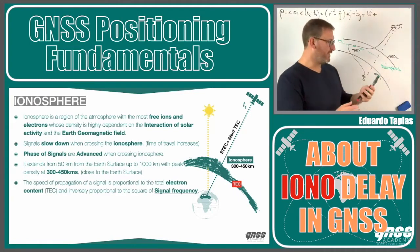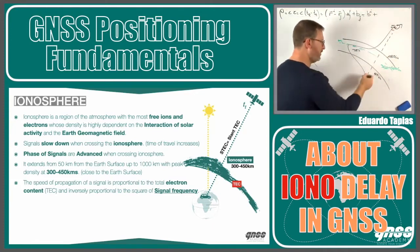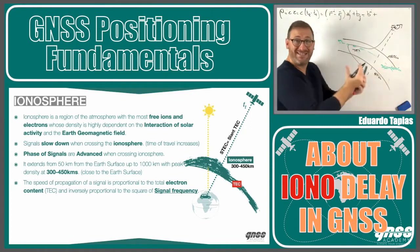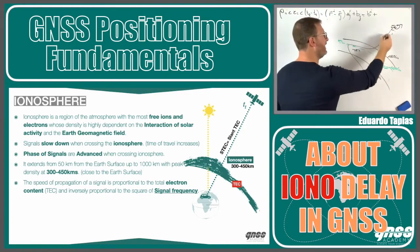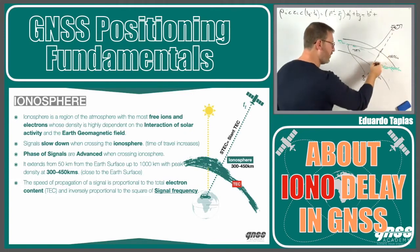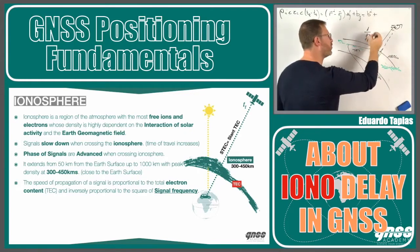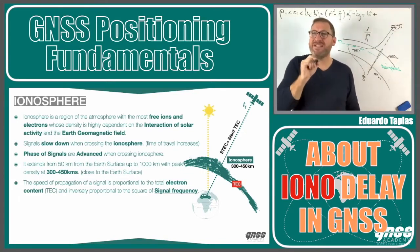One of the particularities of the signals while traveling from the satellite to the user is that they are delayed — the speed of light gets slower. But also, the most important thing is that this delay when crossing the ionosphere depends on the frequency by 1 divided by the frequency squared. This ionospheric delay depends on the frequency of the signal. This is very important.